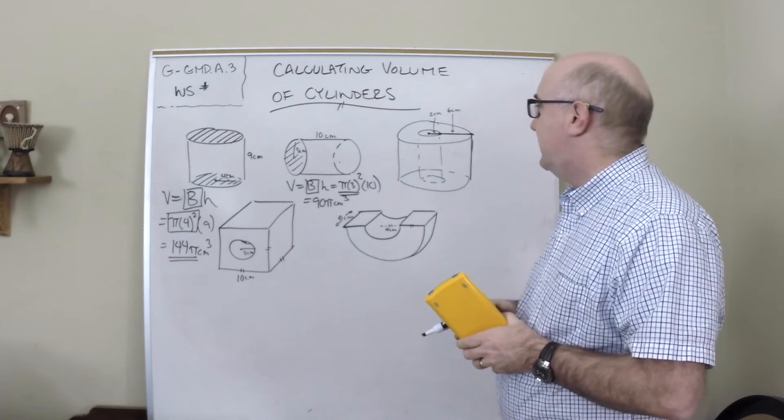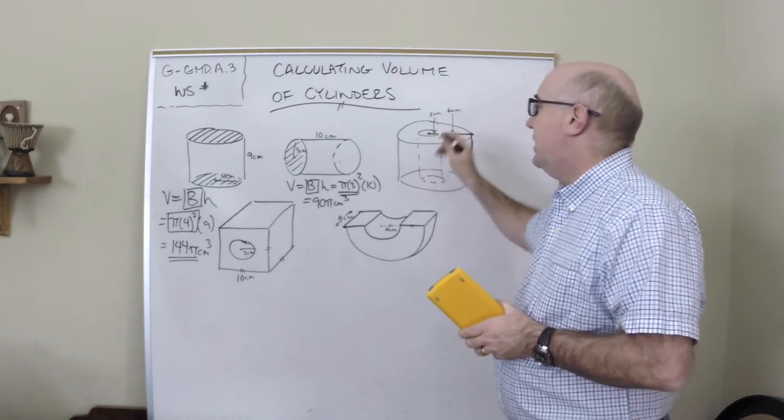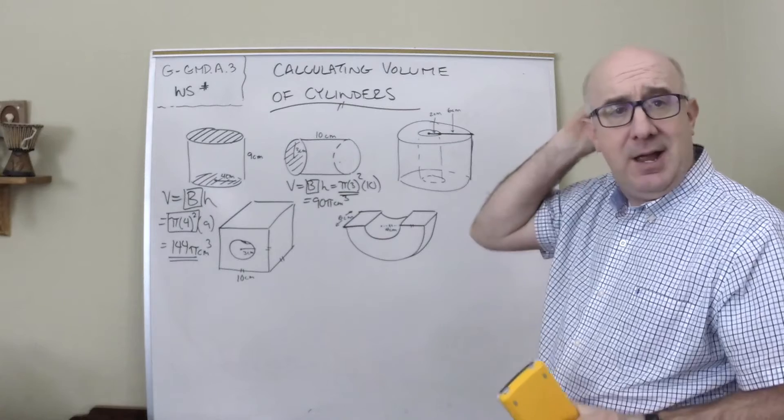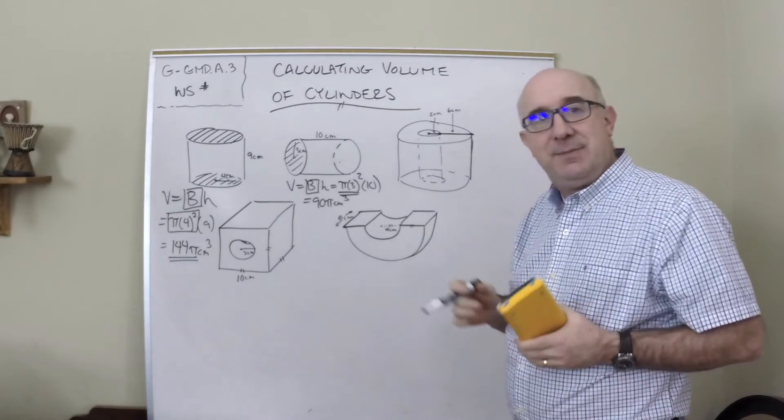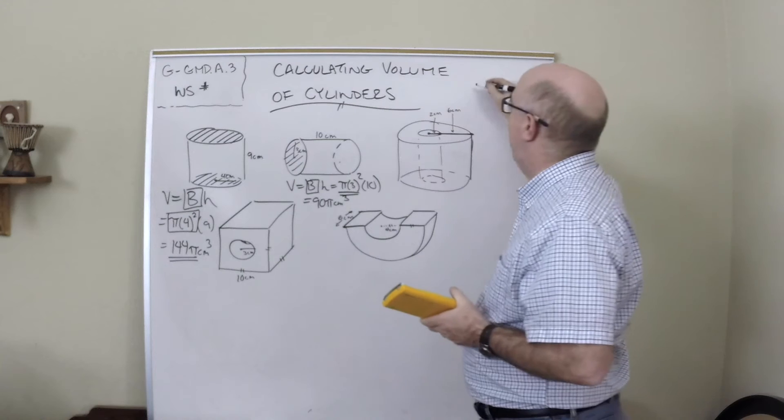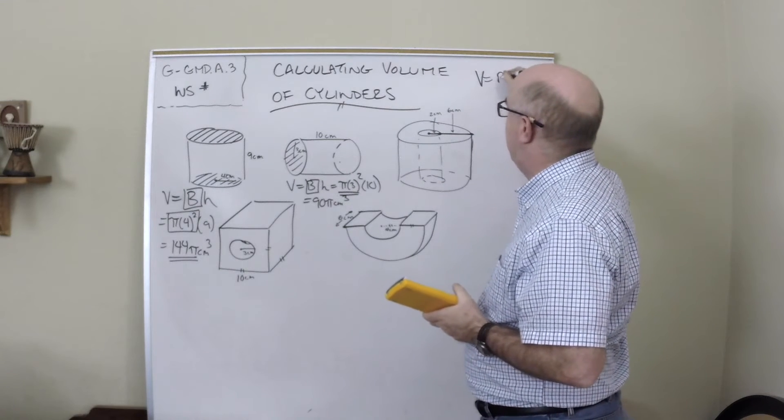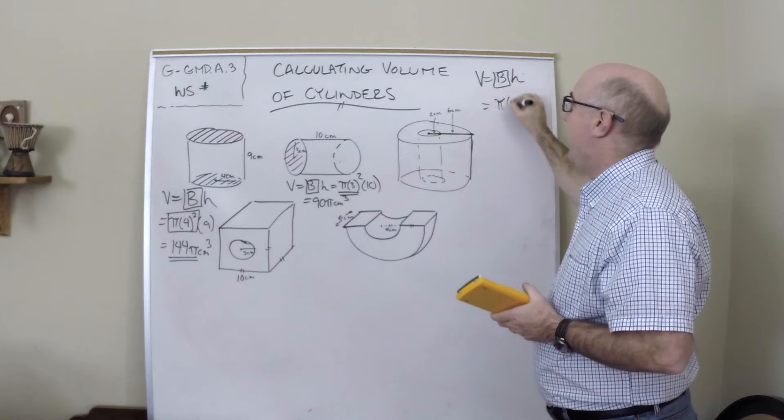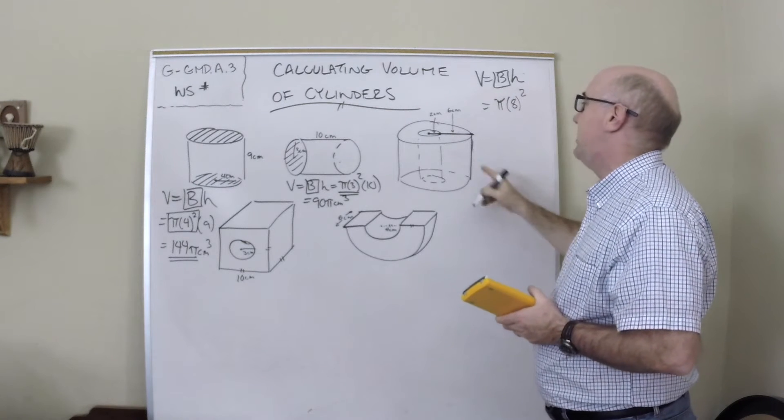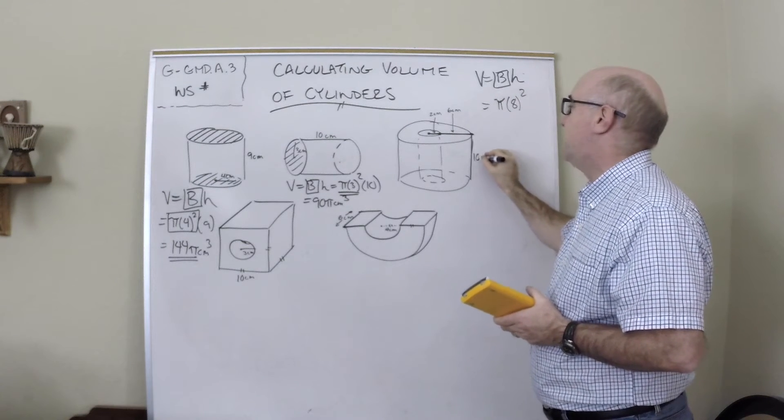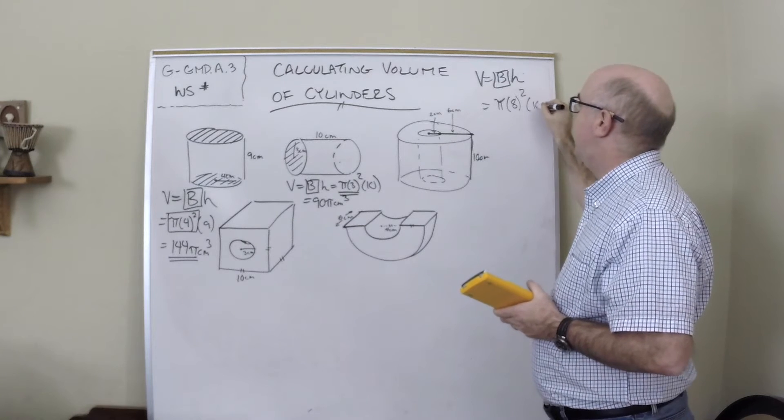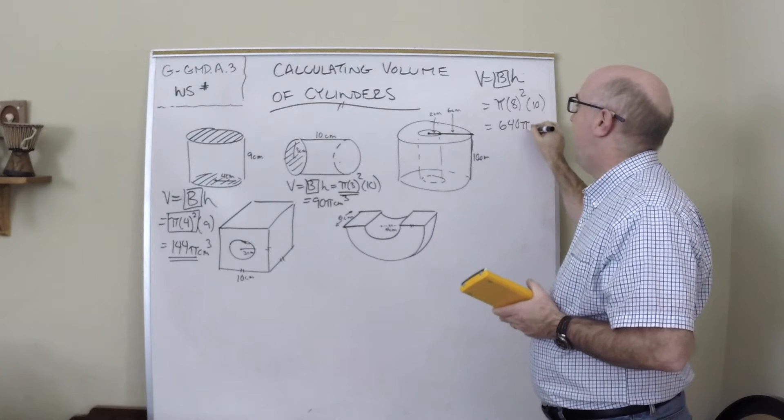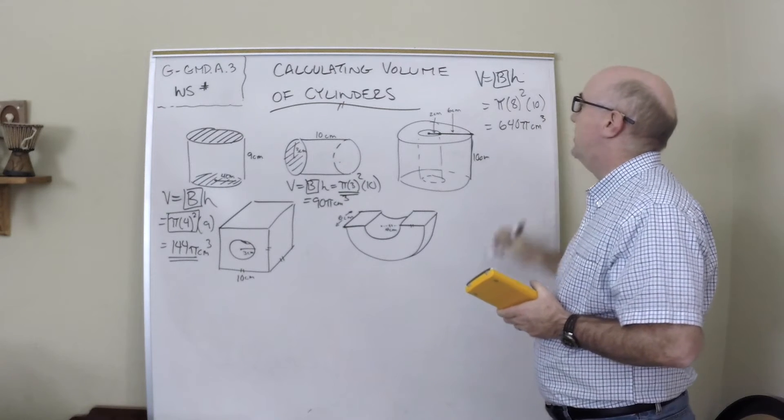You can do this in different ways. You can find the disc with the hole in it and then just multiply by the height. In this case, I like to see them as two separate things. I'm going to find the volume of the entire cylinder, which would be π(8²) times a height of 10, and this is 640π centimeters cubed.